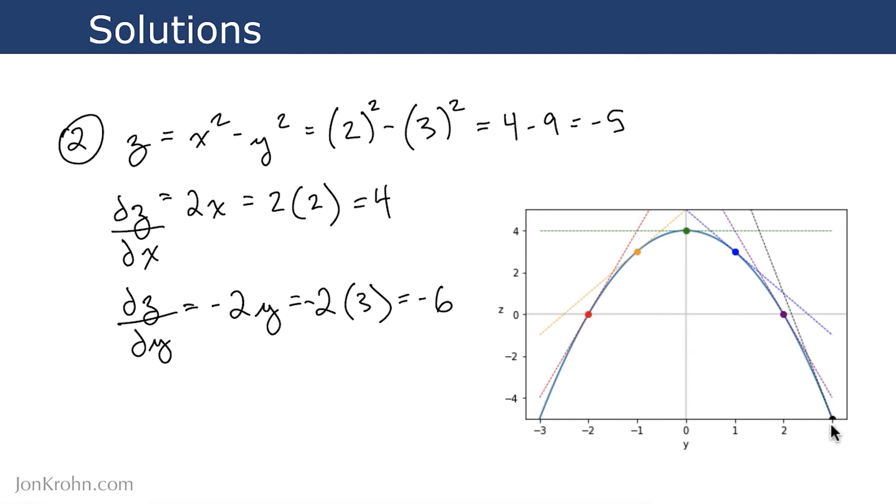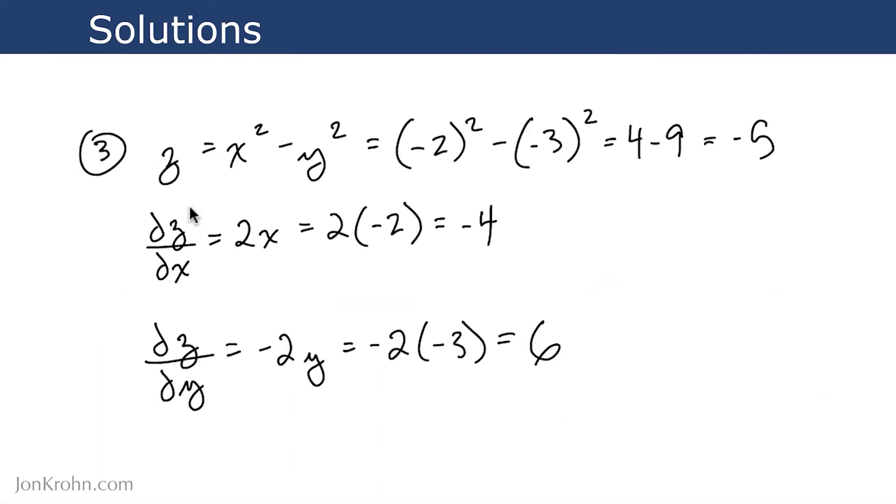And we can see that at that point z is equal to negative 5, and we have a slope here of negative 6. Finally, for exercise 3, where x is equal to negative 2 and y is equal to negative 3, we have a z of negative 5, del z del x is negative 4, and the slope of z with respect to y is 6.